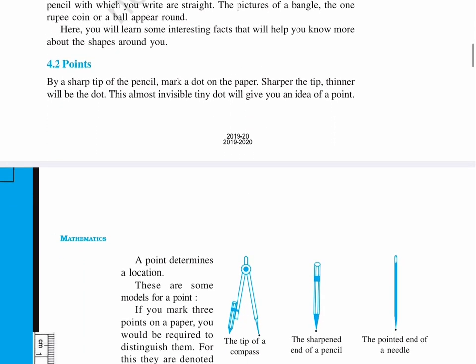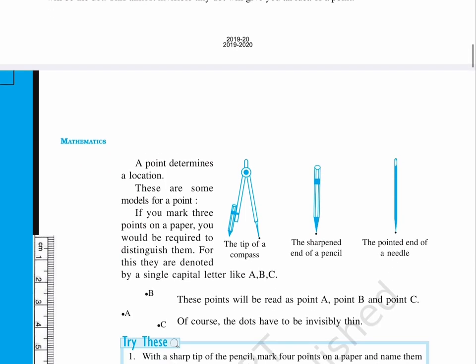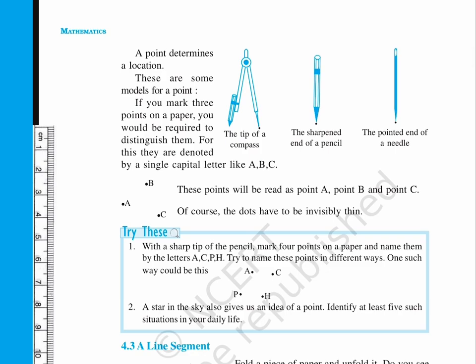4.2 Points. By a sharp tip of the pencil, mark a dot on the paper. Sharper the tip, thinner will be the dot. This almost invisible tiny dot will give you an idea of a point.